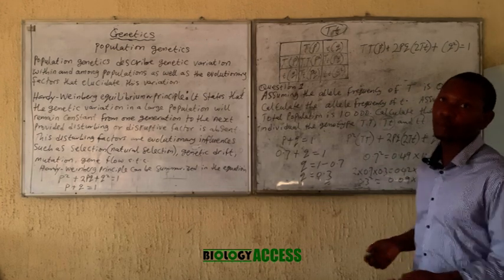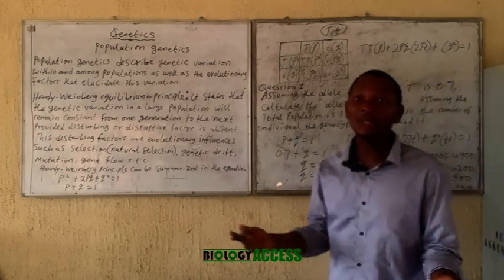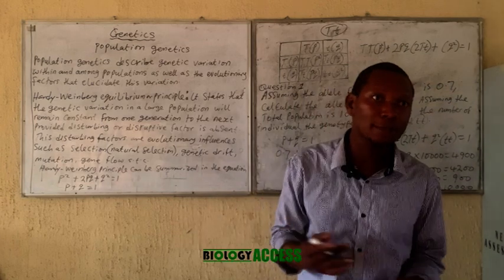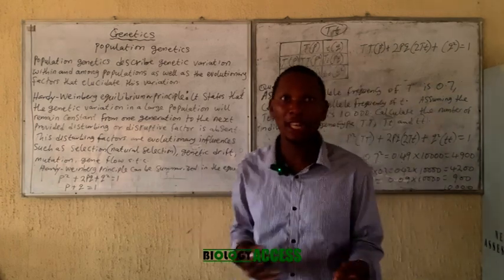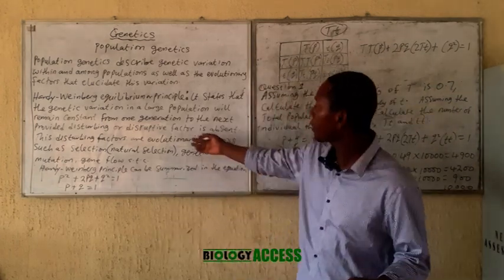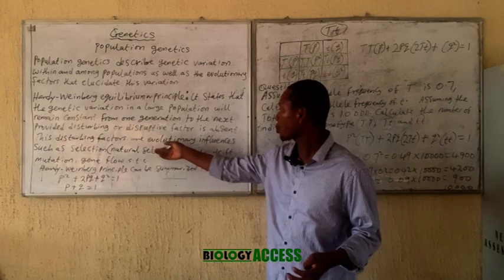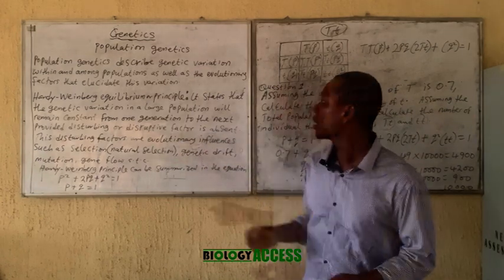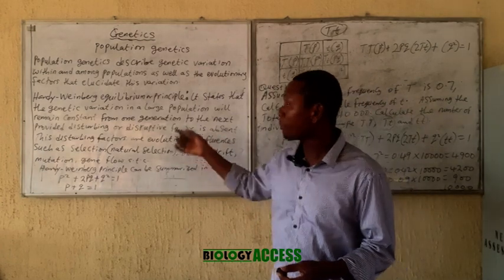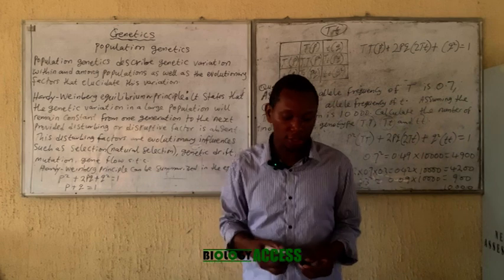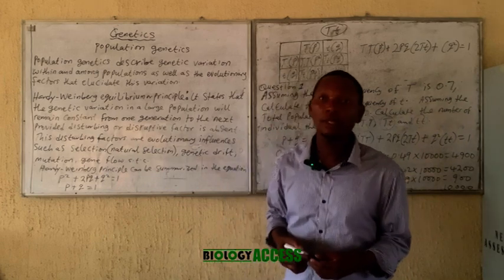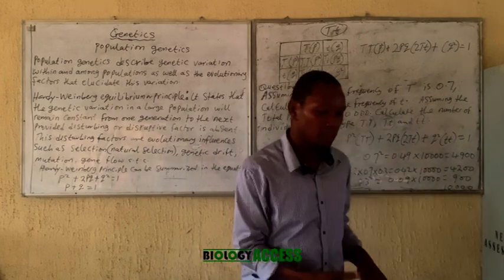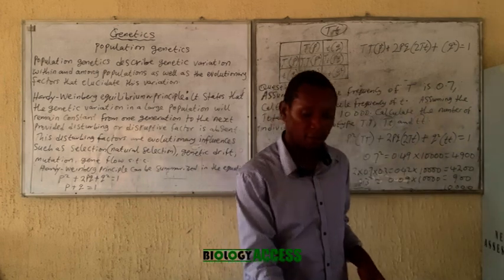This is just an introductory part. In subsequent videos I will give you various types of calculations as well as explain the various factors that can affect population genetics and bring about change in genetic variation. Thank you. If you have any questions you can drop them in the comments.